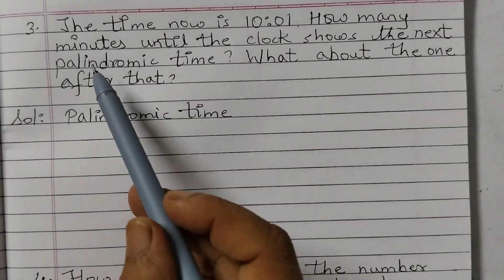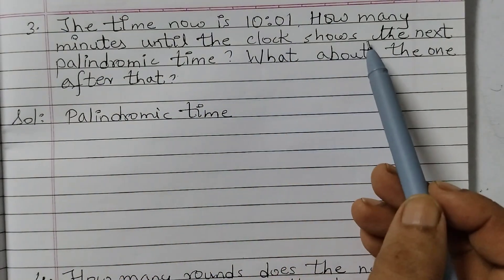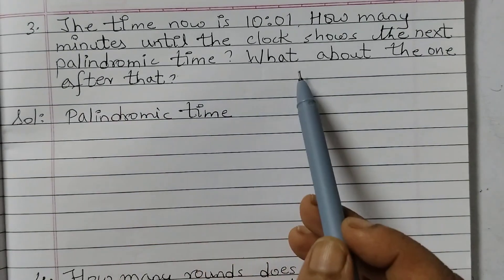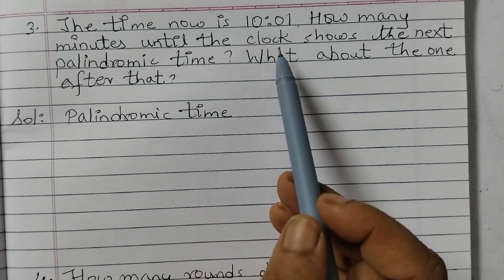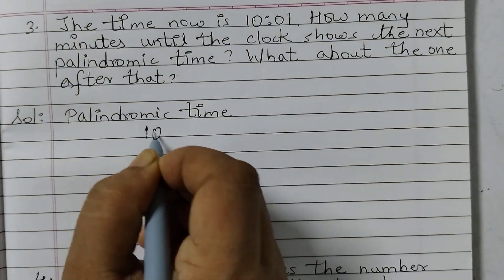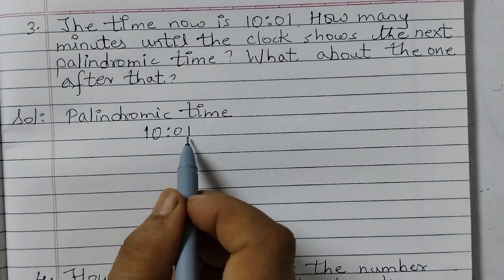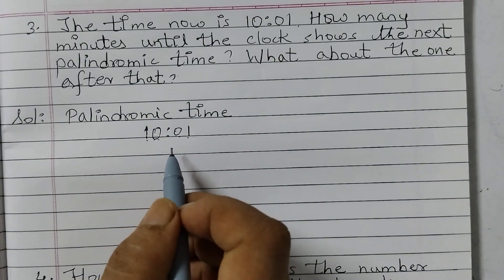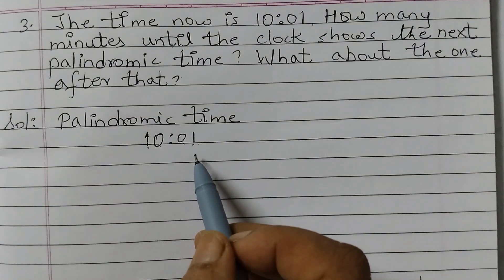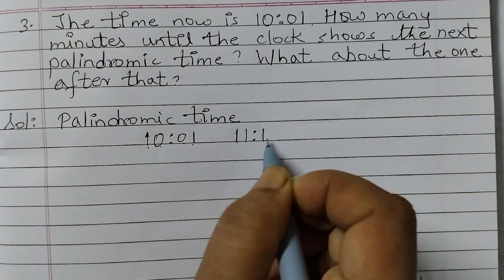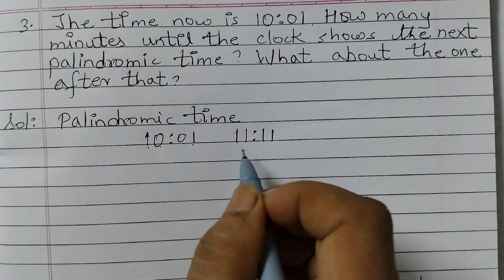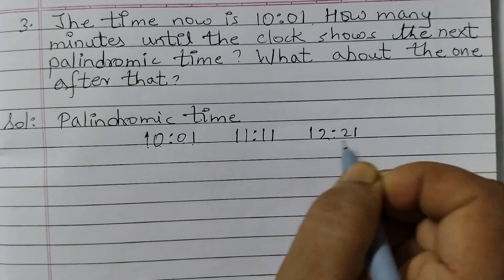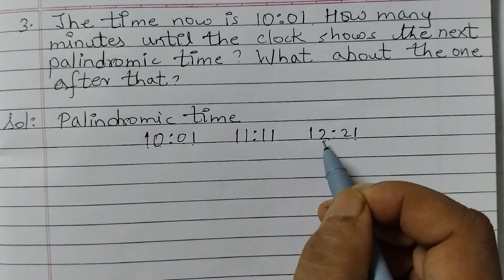Moving on to question number 3. The time now is 10:01. How many minutes until the clock shows the next palindromic time? The time 10:01 is palindromic because reading the digits 1,0,0,1 forwards and backwards is the same. The next palindromic time after 10:01 would be 11:11, and the one after that would be 12:21, reading as 1,2,2,1.